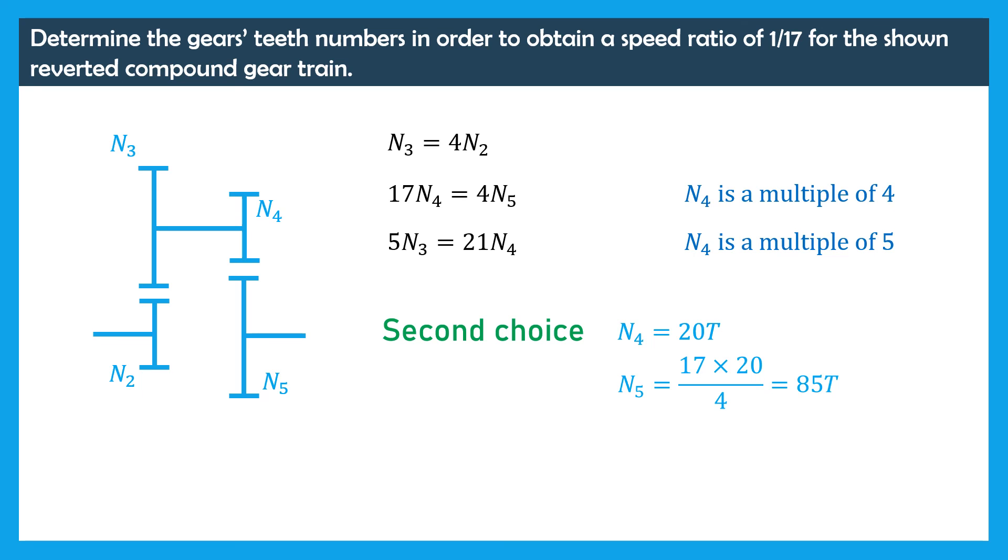Using the third equation we have N3 is equal to 21 times 20 over 5, thus N3 is equal to 84 teeth. Finally, using the first equation, we have N2 is equal to 84 divided by 4, thus N2 is equal to 21 teeth.